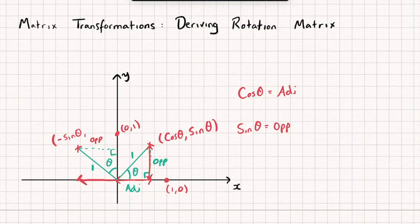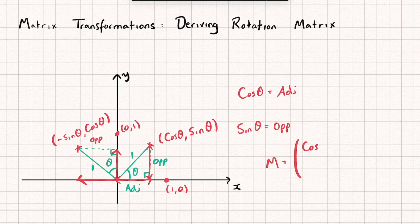The y coordinate is how far up we've moved on the y axis, which is the adjacent side, so it's cos θ. These rotated points are the new columns of our matrix, so the generic transformation matrix for a rotation of theta degrees anti-clockwise about the origin is: [cos θ, −sin θ; sin θ, cos θ]. All we need to do is input a value of theta to rotate anti-clockwise by that angle.